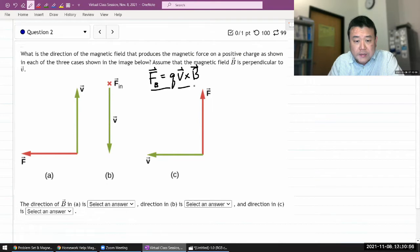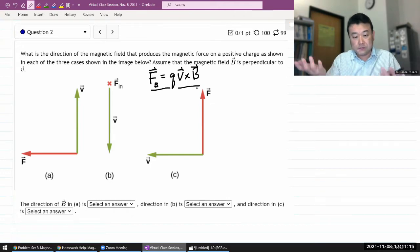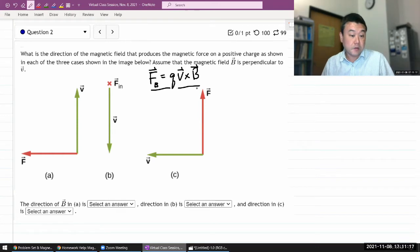Now, what's different here is that instead of giving you velocity and magnetic field and asking you for the force, it's giving you the direction of force and velocity and asking you what magnetic field would have been to get that direction of force. So there are different ways to do this question.